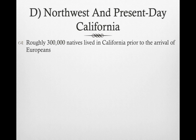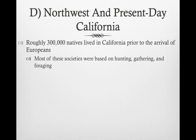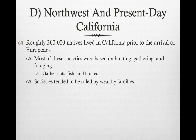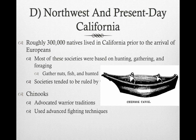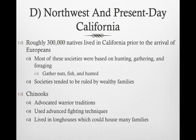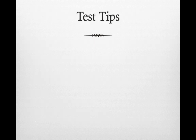In the northwest and present-day California, roughly 300,000 natives lived there prior to the arrival of Columbus and other Europeans. Most of these societies were based on hunting, gathering, and foraging — gathering nuts, fishing, and hunting. These societies tended to be ruled by wealthy families. The Chinooks advocated warrior traditions, used advanced fighting techniques, lived in long houses that could house many families, and used canoes for fishing.